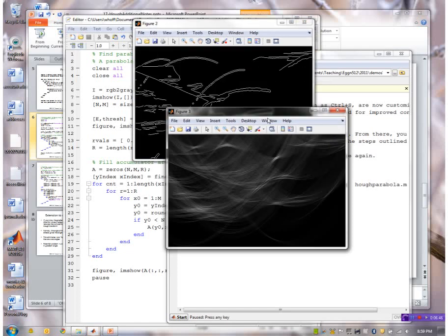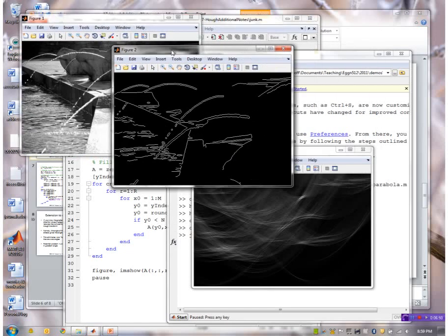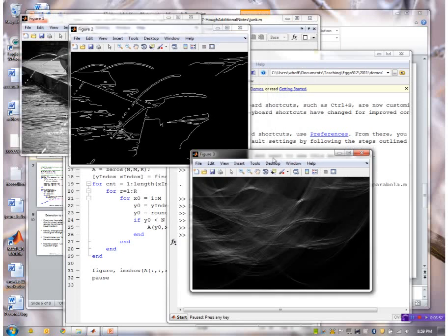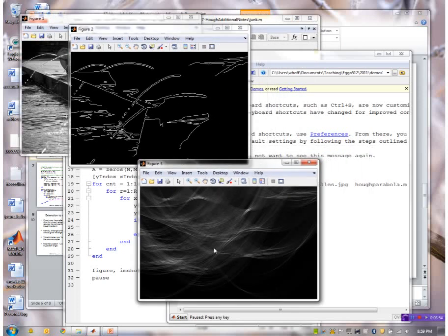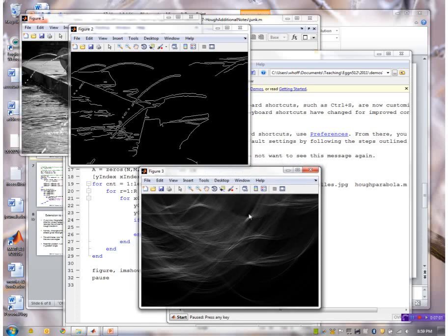Okay, so this is the input image, of course first the edge image, and this is the accumulator array. It's actually a three-dimensional array so this is only one slice of that array. So you can see that we do have some peaks here and there.